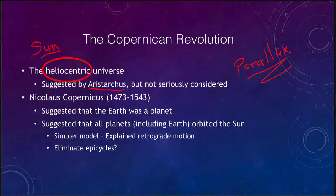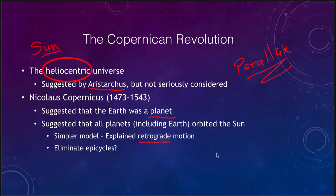It turns out that the stars are just so far away. Copernicus suggested really for the first time that the earth was a planet just like the other five planets known at the time, and that all of the planets — including the earth — orbited the sun. This was a simpler model and a simple way to explain retrograde motion, or the backward motion of the planets. In order to explain this under the Ptolemaic theory, we needed epicycles. However, under the heliocentric universe this would be explained naturally when one planet passes the other.